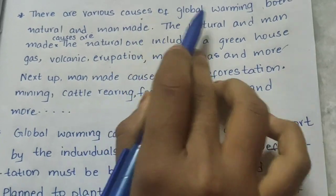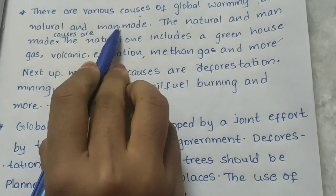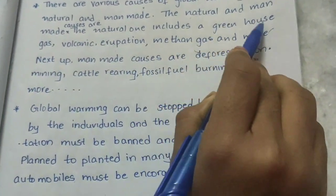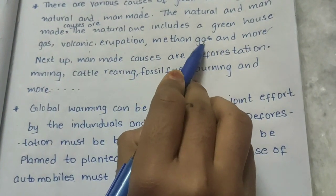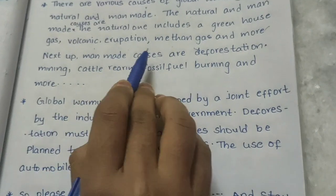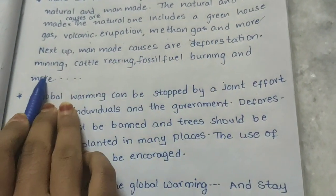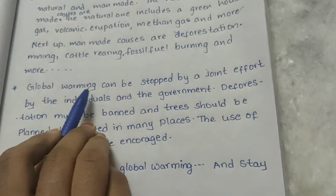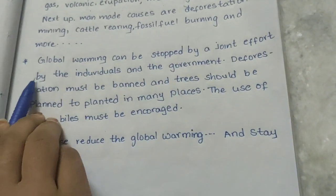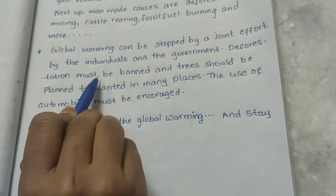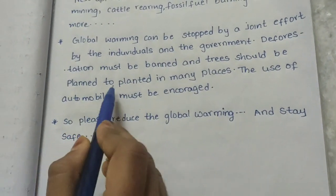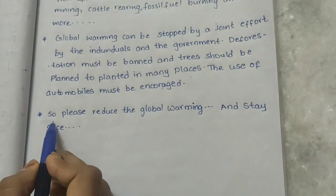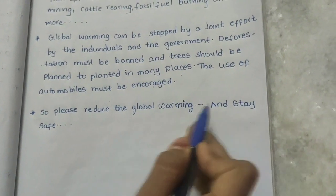There are various causes of global warming, both natural and man-made. Natural causes include greenhouse gases, volcanic eruptions, methane gas, and more. Man-made causes include deforestation, mining, cattle rearing, fossil fuel burning, and more. Global warming can be stopped by the joint effort of individuals and the government. Deforestation must be banned and trees should be planted in many places. The use of automobiles must be reduced. Please help reduce global warming and stay safe.